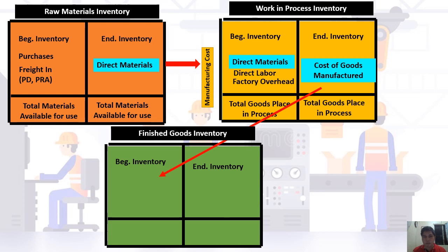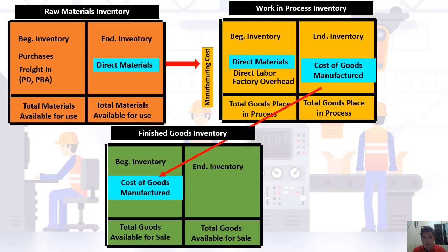The cost of goods manufactured is transferred to the left side of finished goods inventory, representing finished products completed during the period. Adding cost of goods manufactured to beginning finished goods inventory gives us total goods available for sale. Through physical counting, we determine finished goods ending inventory and deduct it to get the cost of goods sold — flowing from raw materials, to work in process, then to finished goods inventory.